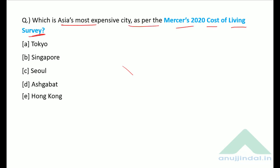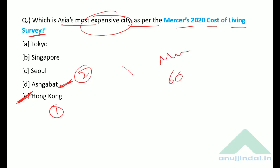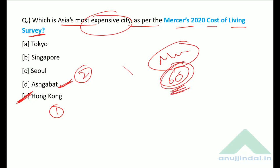Which is Asia's most expensive city as per Mercer's 2020 Cost of Living Survey? According to this survey, Asia's most expensive city is Hong Kong at number one, and number two is Ashgabat. From India, the most expensive city is Mumbai, which is ranked 60th overall.